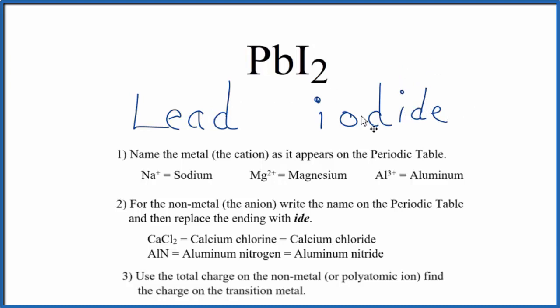So at this point, we have lead iodide. But remember we said Pb is a transition metal. We don't know its charge. We have to look at what it's bonded to. It can have different charges.